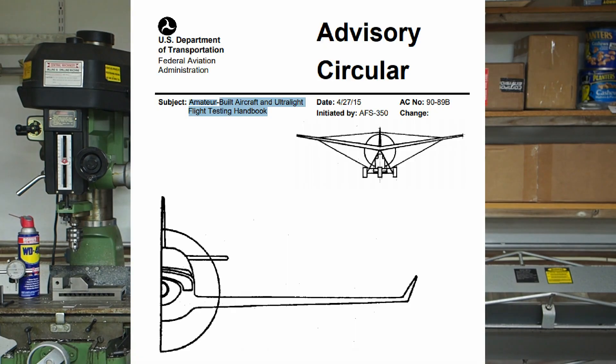Once we have a fully assembled airplane, it'll be time to start flight testing. We'll go through a rigorous flight test program, starting from simple bunny hops and high-speed taxiing, all the way up to stall and spin testing. But we'll do it in incremental steps, being very careful the whole way.